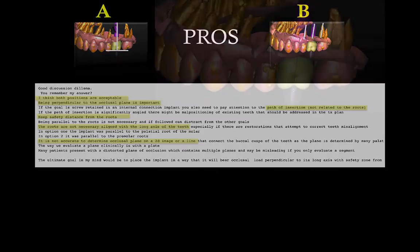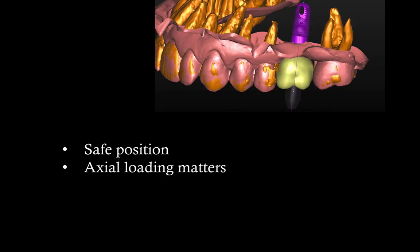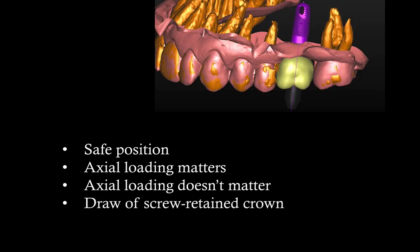From my email communication with friends and colleagues, we learned that the implant needs to be positioned safely without causing damage to adjacent roots and away from the sinus. Axial loading matters — meaning perpendicular to the occlusal plane — or perhaps it doesn't matter as much in practice. A very important piece of information is that the implant should be positioned parallel to the proximal contacts so there is a draw of a screw-retained crown, allowing proper contacts and embrasures. So we're getting details and starting to solve this puzzle.